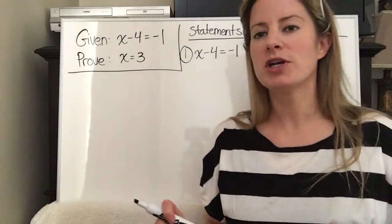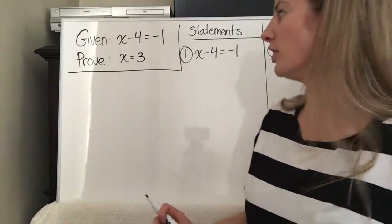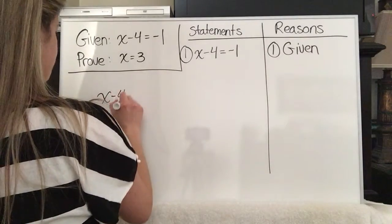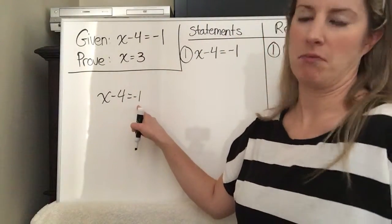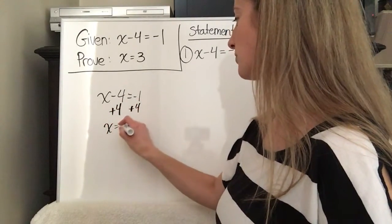OK, so now what you want to do is think about, how would I solve this if it were just a problem on the paper? What would I do? So you can kind of do some work down here, and you can say, OK, well, if I had x minus 4 equals negative 1, all I'm going to do is add 4 to both sides, and I'm going to end up with x equals 3.